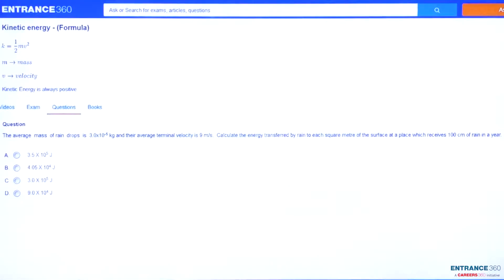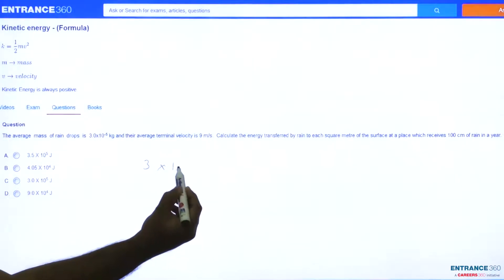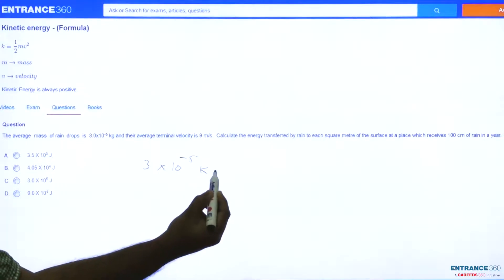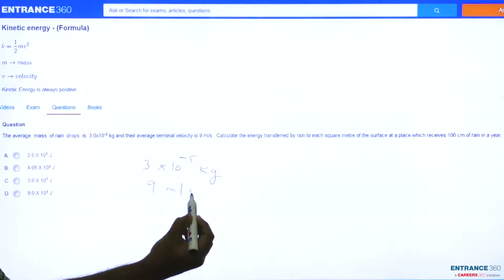Hi everyone, let's discuss a question from JMA 2014 from the chapter Work, Power, and Energy. The question says the average mass of a rain drop is given as 3 × 10⁻⁵ kilogram and terminal velocity is given as 9 meters per second. We have to calculate the energy transferred by rain to each square meter of the surface at a place which receives 100 centimeters of rain in a year.